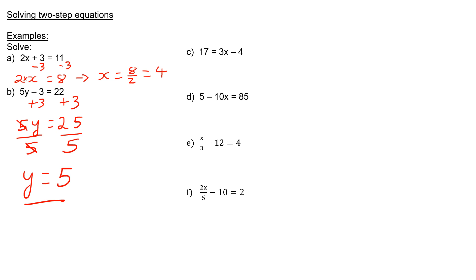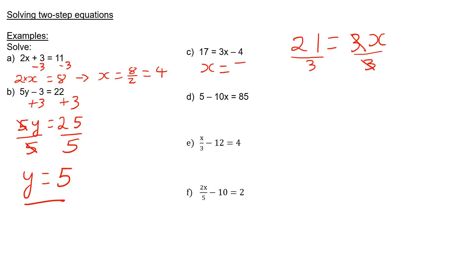In question C, it doesn't matter that the x is on the right-hand side. The method is the same. I'm going to add 4 to both sides, which will leave me with 21 equals 3x. I'm then going to divide both sides by 3, which will leave me with 7 equals x, or x equals 7.